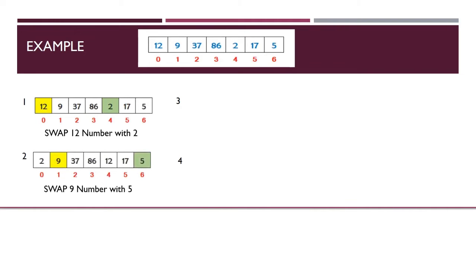Now find the second smallest number stored in the array between index 1 and 6. The sorted sublist stores the minimum number and the unsorted sublist covers array index 1 to 6. The second smallest number is 5, stored at array index 6. Check if the number at index 1 is greater than the second smallest number at index 6 — meaning is 5 greater than 9? If so, swap the numbers.